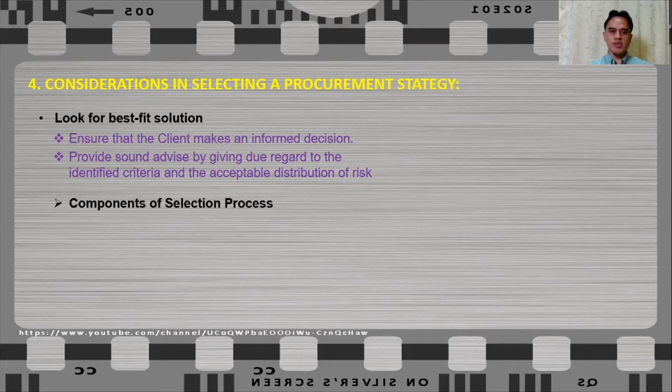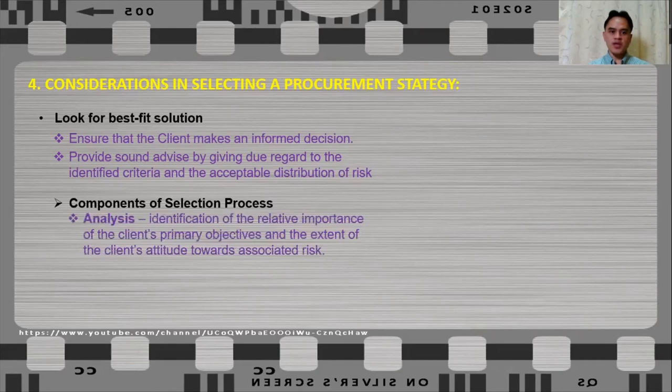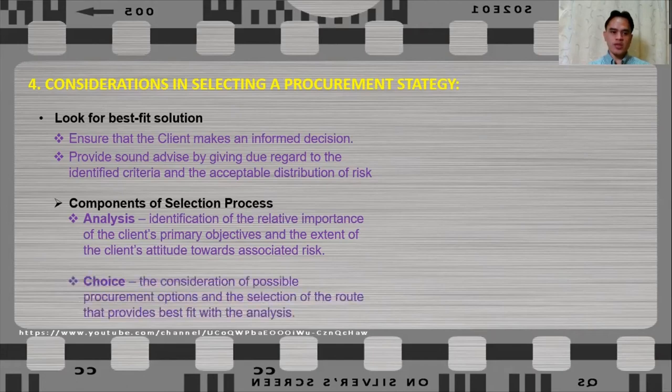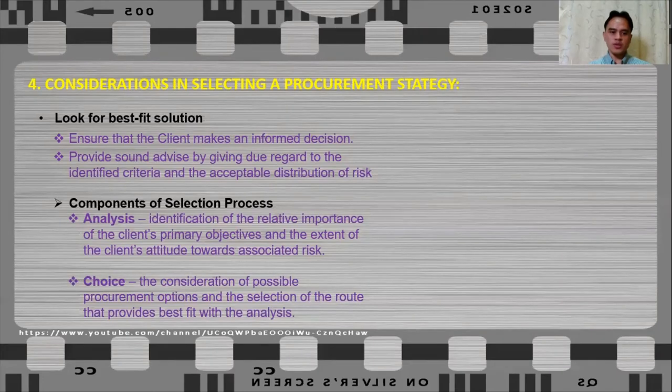Now, in selecting this best fit solution comes with the following components. First is the analysis or the identification of the relative importance of the client's primary objectives and the extent of the client's attitude towards associated risks. The second component is the choice or the consideration of possible procurement options and selection of the route that provides best fit with the analysis.